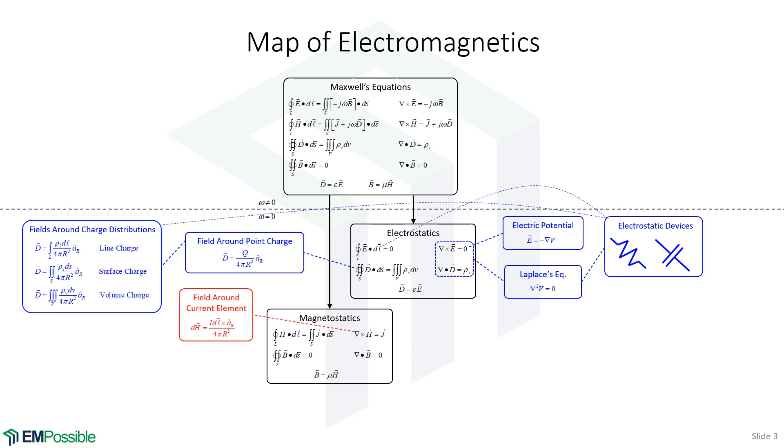At that point, we move on to magnetostatics, and in many ways, we'll parallel what we did for electrostatics. We'll look at the curl equation, Ampere's Circuit Law, and we will calculate the field around a differential current element. We will call that the Biot-Savart Law. From there, we can look at the magnetic fields around line currents, surface currents, and volume currents.